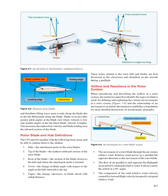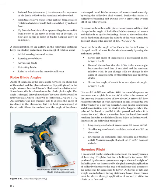Airflow and Reactions in the Rotor System: when introducing and describing the airflow in a rotor system, the instructor must first identify the types of relative wind. The movement of a rotor blade through the air creates relative wind, which moves in a parallel but opposite direction to the movement of the rotor blade. The flow of air parallel to and opposite the flight path of an airfoil is rotational relative wind — it always meets the airfoil at a 90-degree angle. Induced flow (downwash) is a downward component of air added to the rotational relative wind. Resultant relative wind is the airflow from rotation modified by induced flow. Upflow (inflow) is airflow approaching the rotor disk from below as the result of some rate of descent.